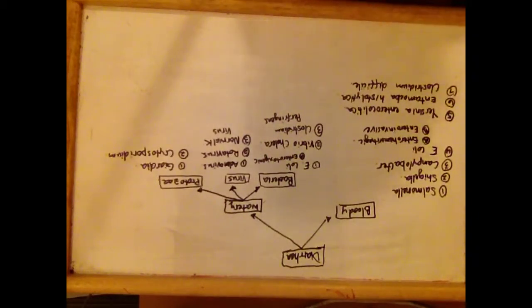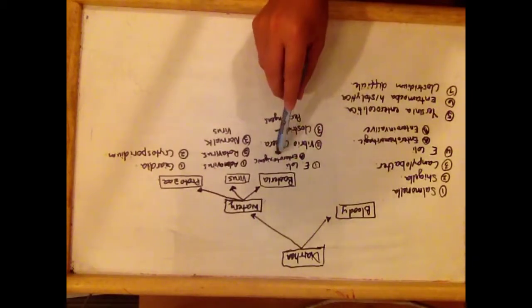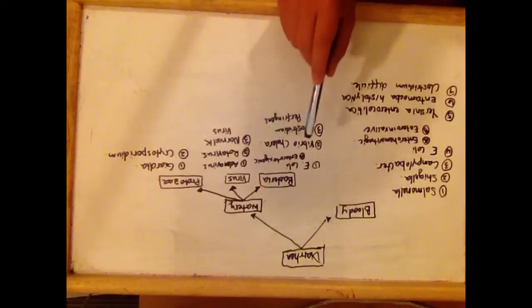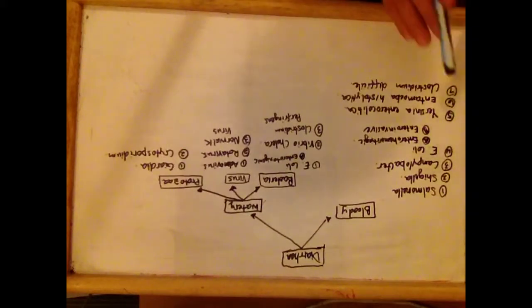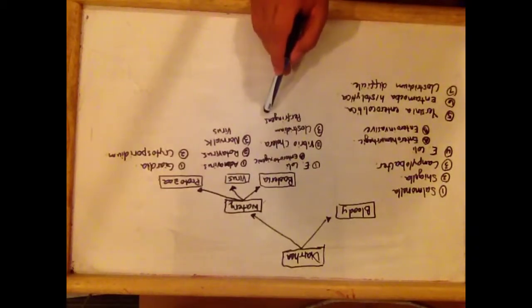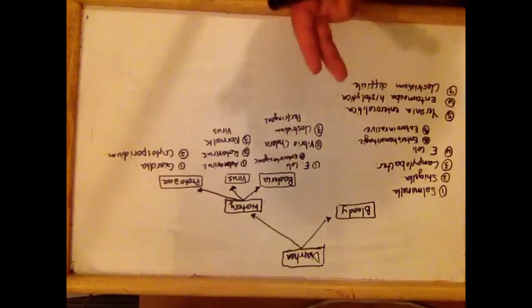In watery diarrhea, we have bacteria, viruses, and protozoa. Bacteria that cause watery diarrhea are E. coli Enterotoxigenic and Vibrio cholerae. Vibrio cholerae causes copious watery or rice water diarrhea. Clostridium perfringens also causes watery diarrhea and can cause gas gangrene.